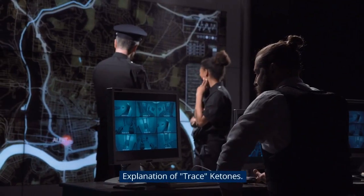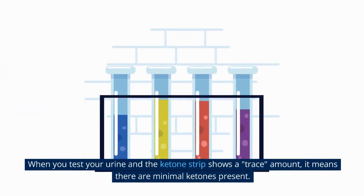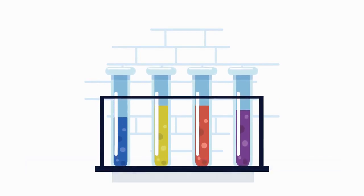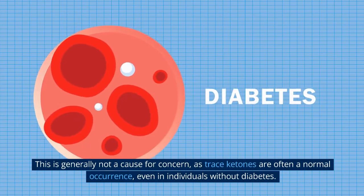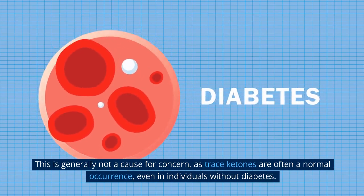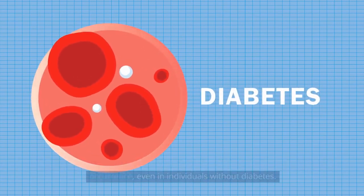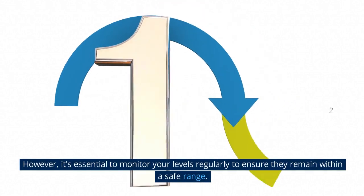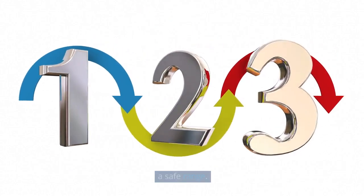When you test your urine and the ketone strip shows a trace amount, it means there are minimal ketones present. This is generally not a cause for concern, as trace ketones are often a normal occurrence, even in individuals without diabetes. However, it's essential to monitor your levels regularly to ensure they remain within a safe range.